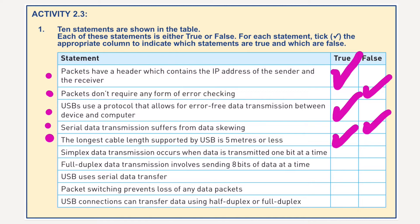Number six: simplex data transmission occurs when data is transmitted one bit at a time. No, that's false. That's serial transmission. Simplex basically means it's only going from the sender to the receiver — not necessarily how many bits at a time. It's purely down to the direction of the transmission.